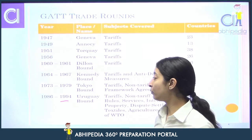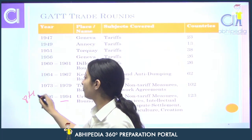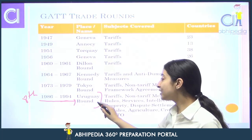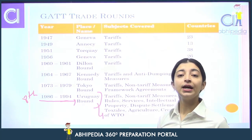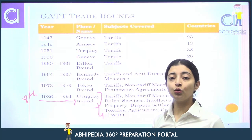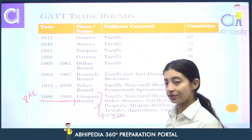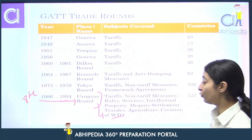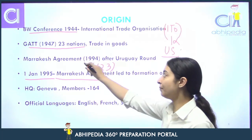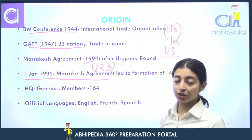Toh jab 8th trade round tha under GATT, uska naam tha Uruguay Round. Ismein decide hua ki hum ek body banayenge global level pe, world trade ko regulate karne ke liye, facilitate karne ke liye, jiska naam hoga World Trade Organization. Iske baad wo agreement — Marrakesh Agreement — sign kiya gaya, aur usse formation huyi World Trade Organization ki.